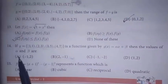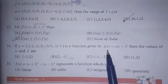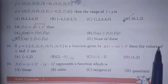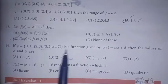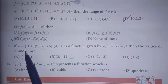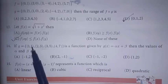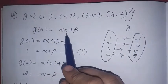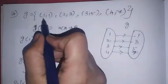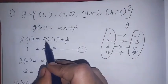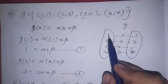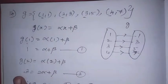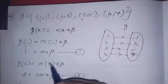Next, the 14th sum: if g is a function given by g(x) = αx + β, then the values of α and β are dash. So g(1) = 1 and g(2) = 3 from the arrow diagram. Substituting x = 1: g(1) = α(1) + β = 1, so α + β = 1. That is equation 1.